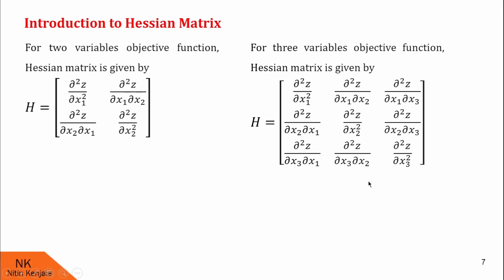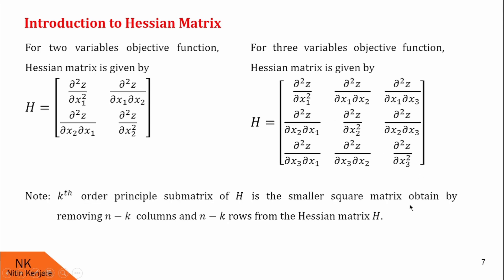The k-th order principal submatrix of H is the smaller square matrix obtained by removing (n − k) columns and (n − k) rows of the Hessian matrix H. For example, the first-order principal submatrix of a 2×2 Hessian is obtained by removing 2 − 1 = 1 row and column, leaving a 1×1 matrix — this is H1. The full 2×2 matrix is H2. For a 3×3 Hessian, H1 is the top-left element, H2 is the 2×2 top-left sub-matrix, and H3 is the entire 3×3 matrix.